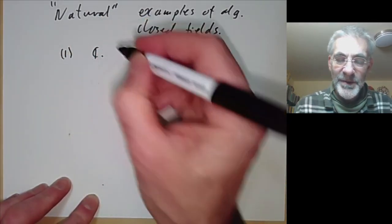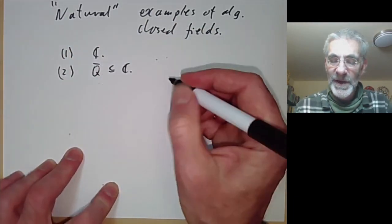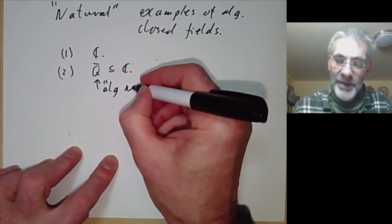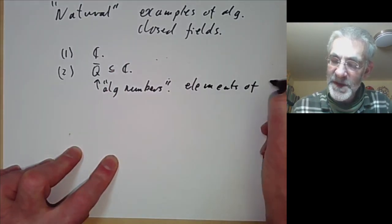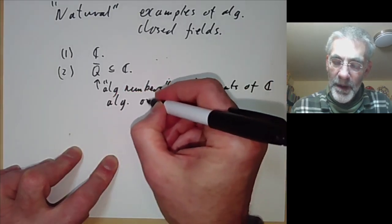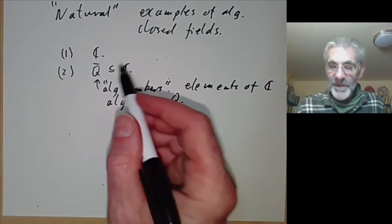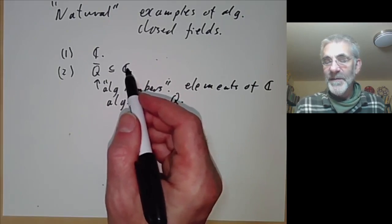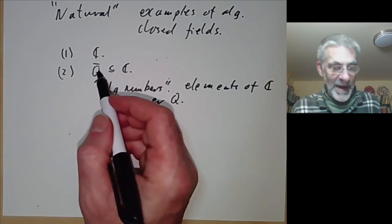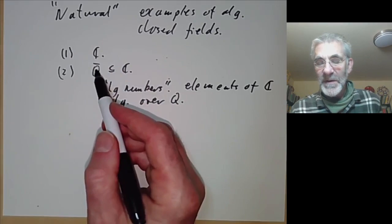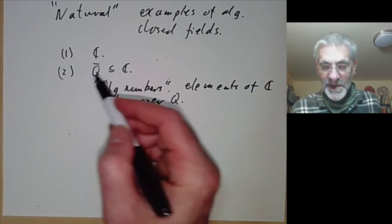First of all we have the complex numbers. Secondly, we've got the algebraic closure of ℚ — written Q̄ — inside the complex numbers. These are the so-called algebraic numbers, which are the elements of ℂ that are algebraic over the rational numbers. Since the complex numbers are algebraically closed, it's fairly easy to check that all elements algebraic over the rationals are also algebraically closed. So this is called the field of algebraic numbers, and there's an entire subject called algebraic number theory devoted to studying just this field.